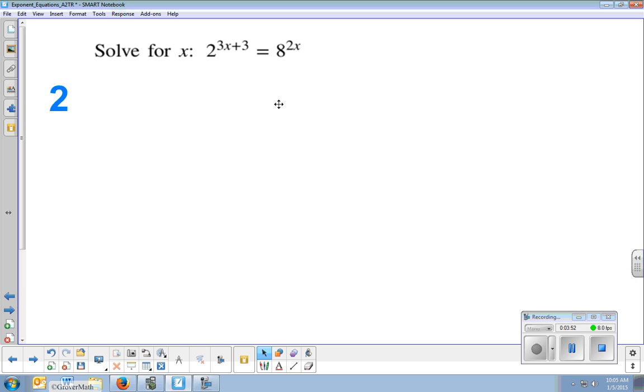Let's try a couple more. 2 to the 3x plus 3 equals 8 to the 2x. Now again, notice that my base is not the same. The base on the left is 2. The base on the right is 8. Can I turn one into the other? Yes. I can turn 8 into a 2. 8 is a power of 2.